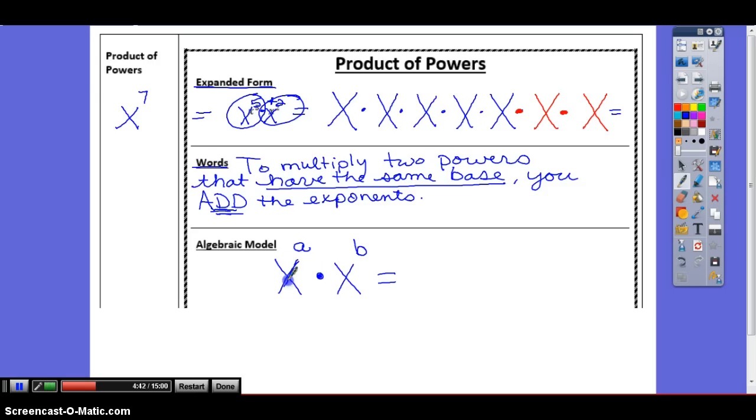What does it mean with an algebraic model? That means if I have x to the a power times x to the b power, what does that mean? That equals x to the, what? Not a times b, but you're close. What are we doing? Adding. That means x to the a plus b, we add our exponents. That's what it would mean in algebraic form right there.